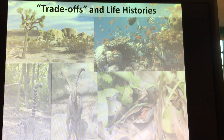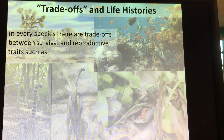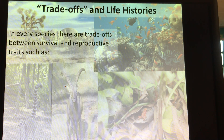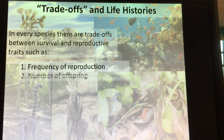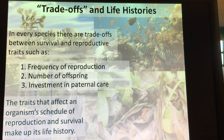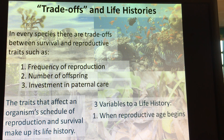There are trade-offs with life histories. Animals have evolved different strategies for success between survival and reproduction. There are different things that species take into consideration depending on whether they're a Type 1, Type 2, or Type 3 survivorship curve — how often they reproduce, the number of offspring they have, and the investment in parental care.